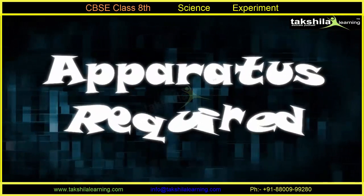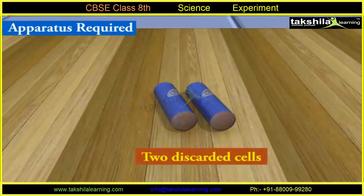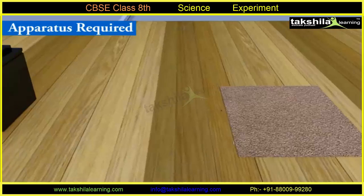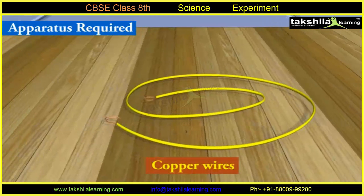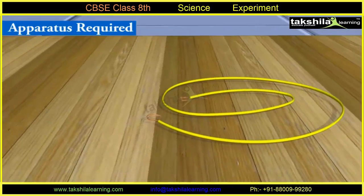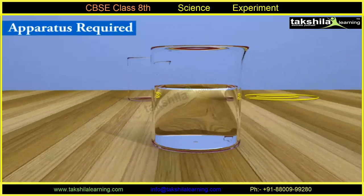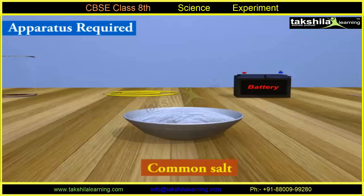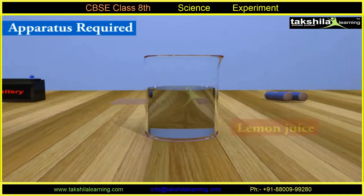Apparatus required: Two discarded cells, sandpaper, a battery, copper wires, a beaker, water, and common salt or sulphuric acid or lemon juice.